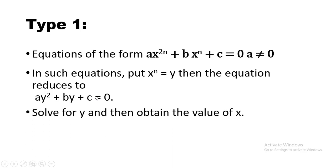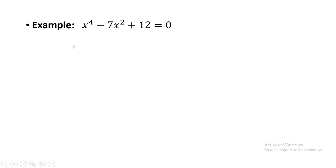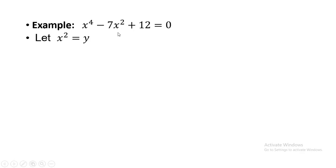Now let's see how we do it. We are taking an example: X⁴ minus 7X² plus 12 equals to 0. As you can see, the first power is 2 times 2, that is 4 — that is what the general form of the equation is. Now let X² = Y. I have supposed Y as equal to X².